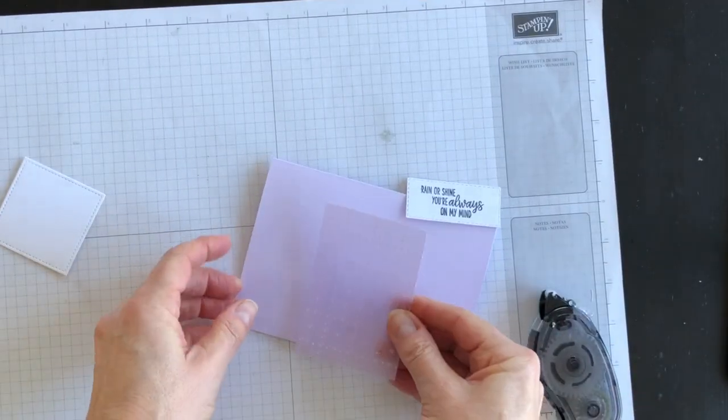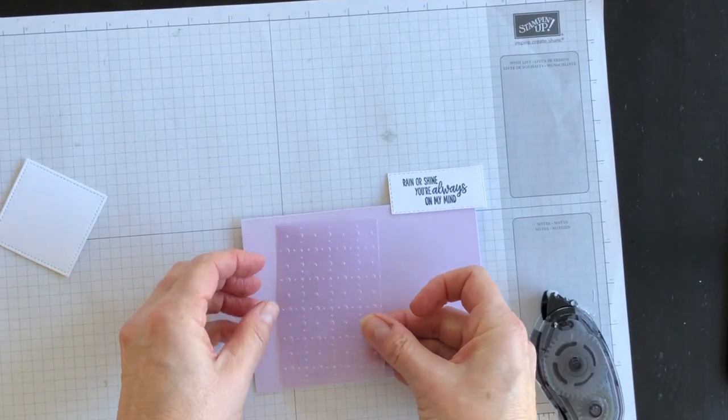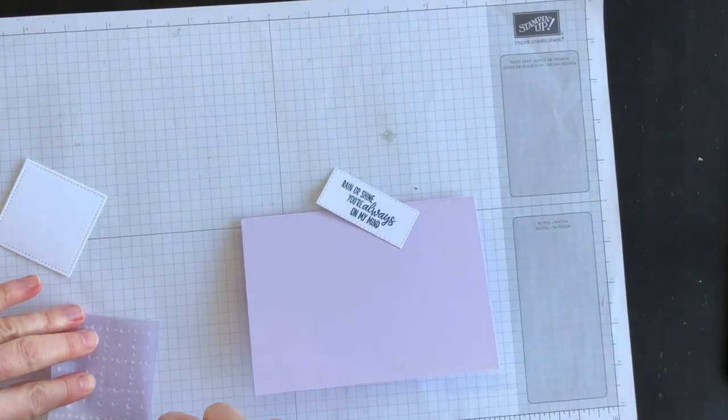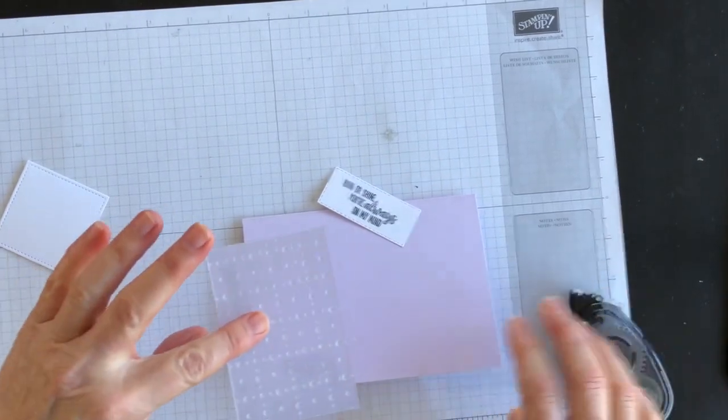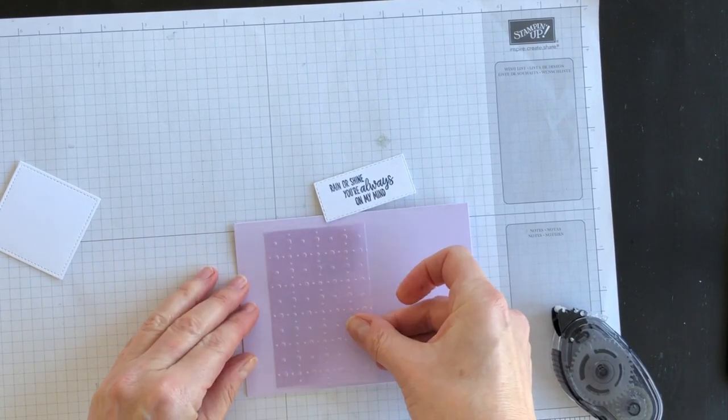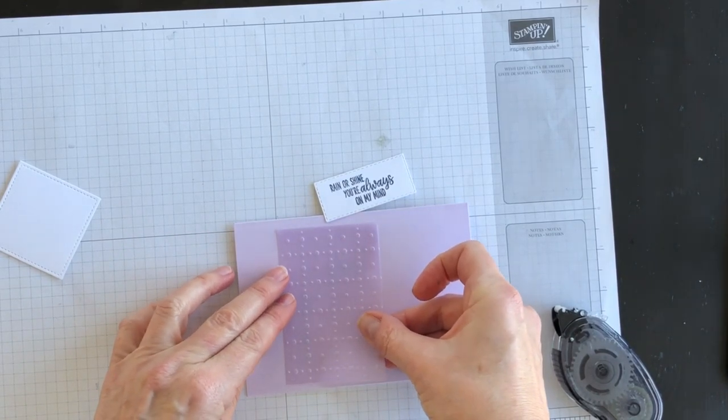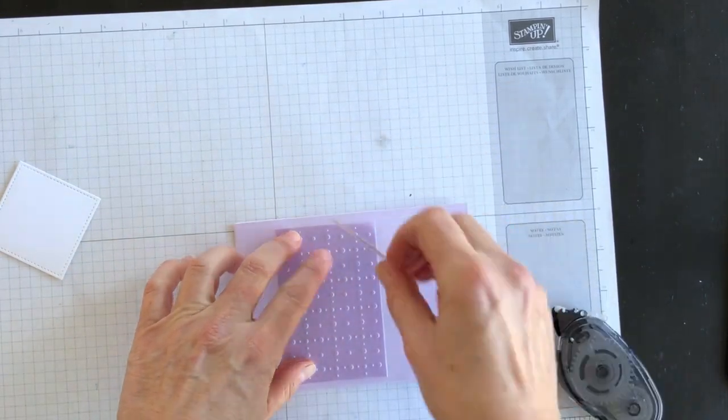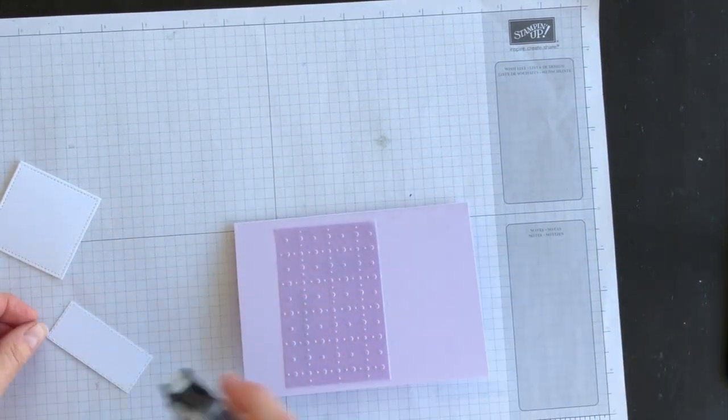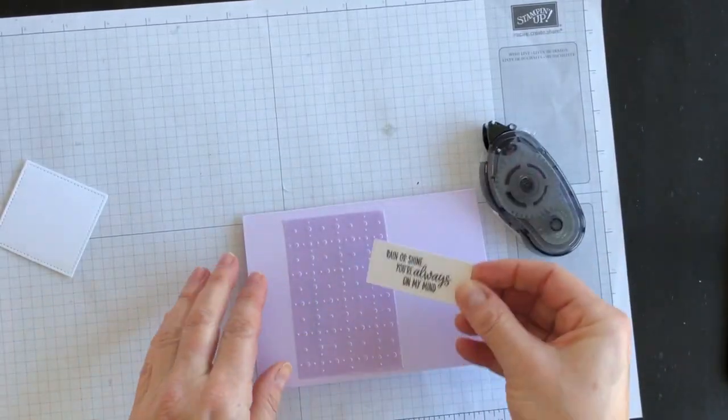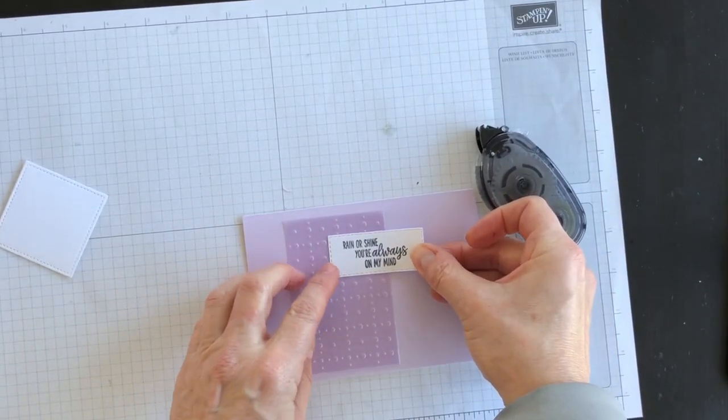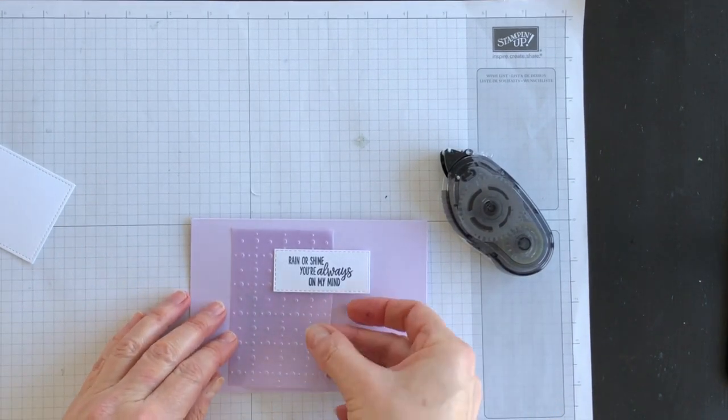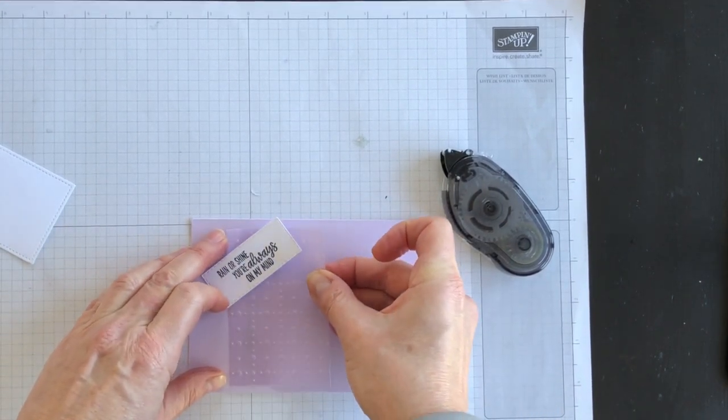So that when I adhere this down onto my card, and then I can cover up what you can see through by my frays and then my other layer. Pretty cool, huh? That's a good tip for you when adhering Vellum.